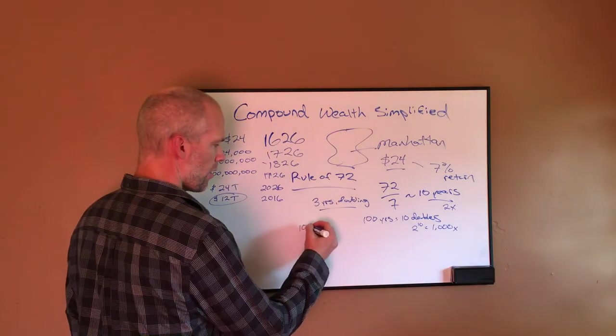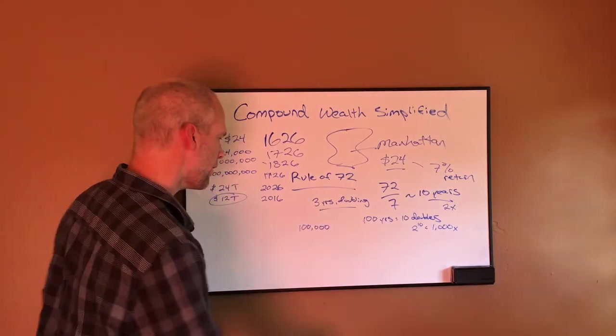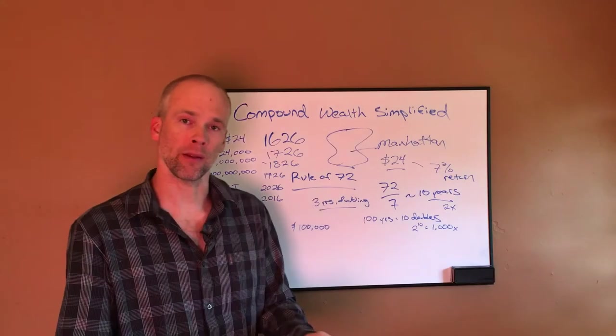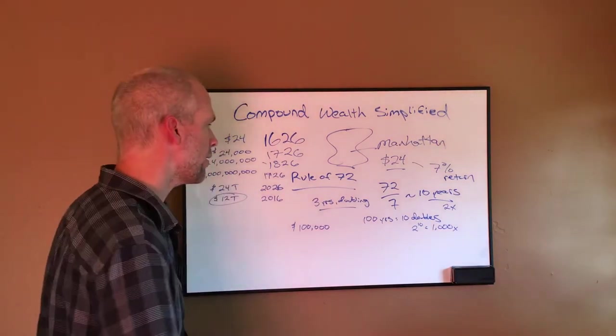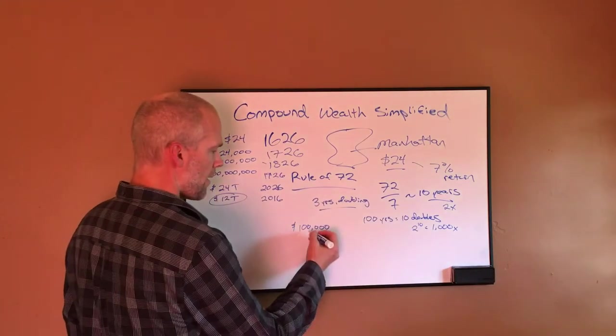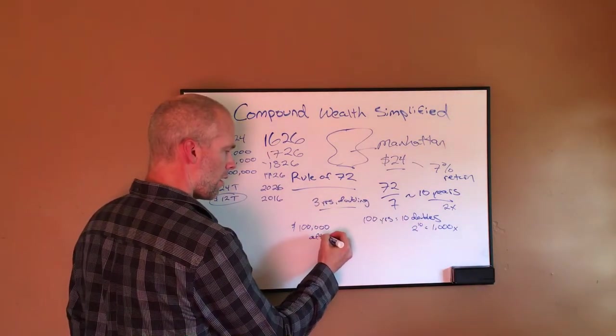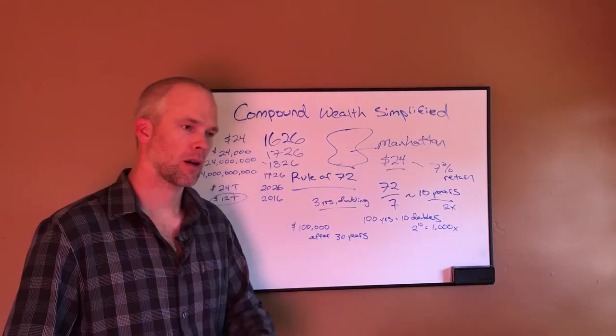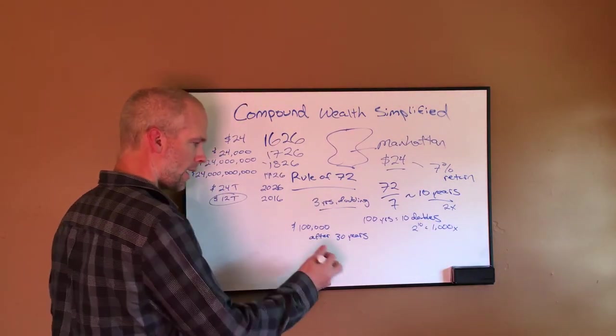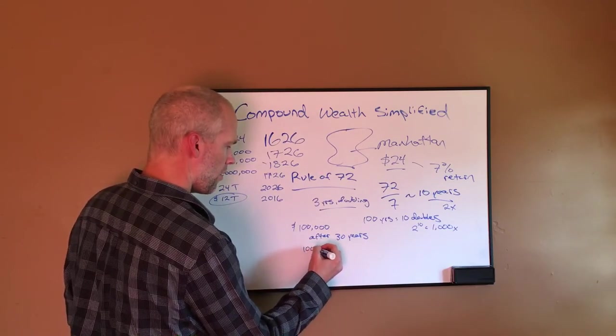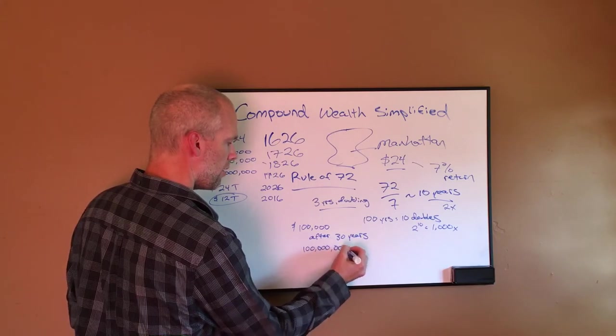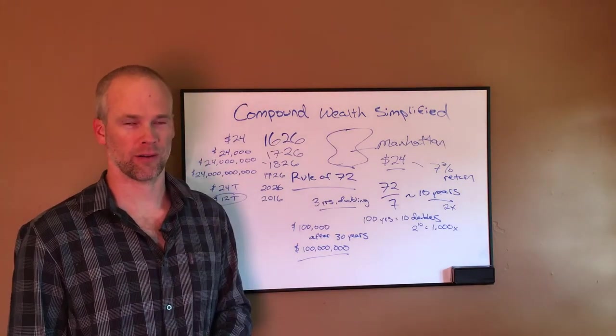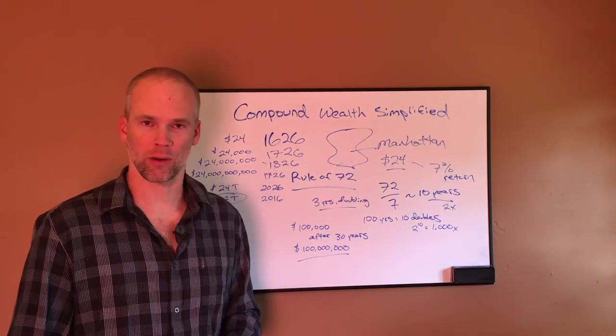So let's say he started with a hundred thousand. Say he started with a hundred thousand and he's doubling every three years. So after 10 doublings, that's 30 years later, 10 doubles, that's a thousand times. So this means if he started with a hundred thousand, after 30 years, if he's doubling every three years, like a 26% rate of return, now he's got a thousand times that. So he's got a hundred million. After 30 years, of course, he's been doing this a lot longer than 30 years, which is why he's got a heck of a lot more than a hundred million.